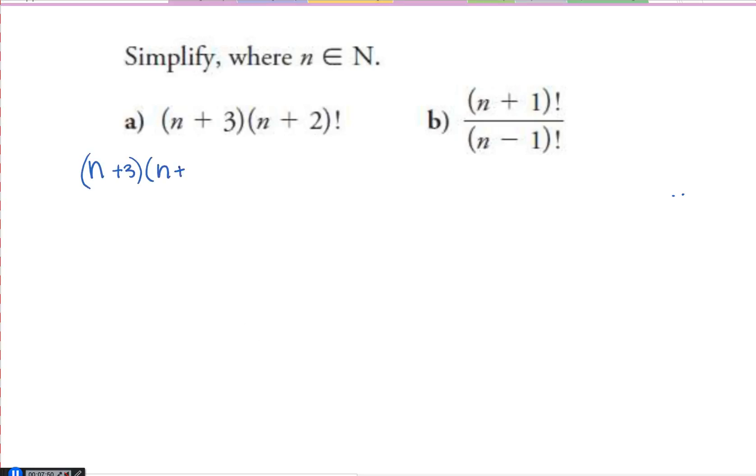So what does this look like? Well, this would be n plus 3 times n plus 2. Now, with our other ones, like if I had 10 factorial, it was 10 times 9 times 8 times 7. And I'm constantly decreasing the value by 1 as I'm multiplying.